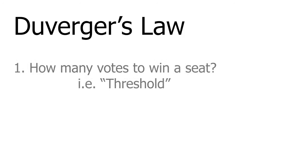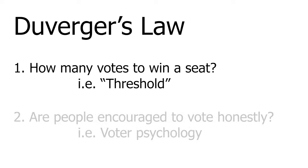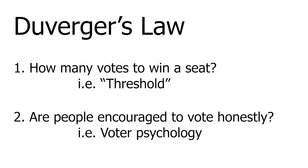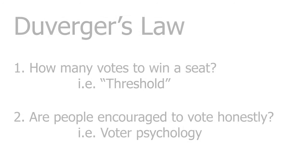Duverger's Law has two main factors. Factor one: how many votes does it take to win a seat? And factor two: are people encouraged to vote for their favorites even if it doesn't look like they'll win? These may seem obvious, but we haven't looked at how things could be different yet.